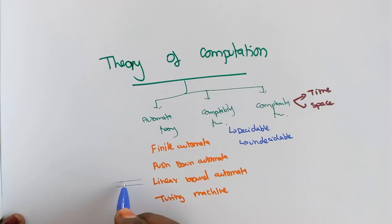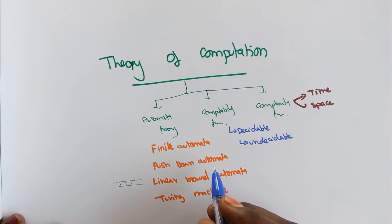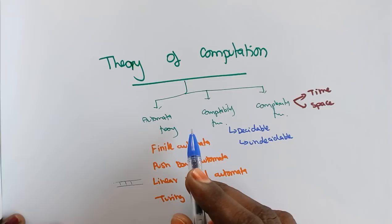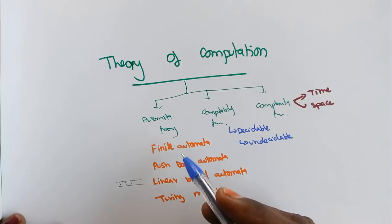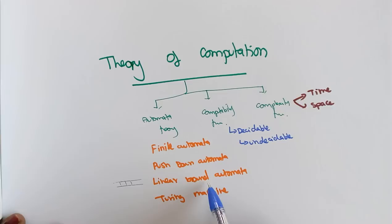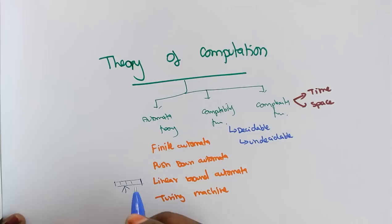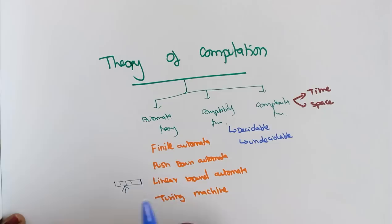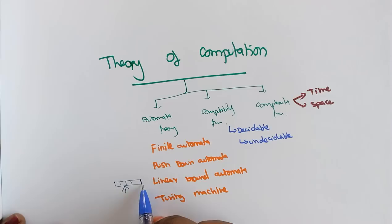The next model introduced is Linear Bounded Automata. It uses a finite tape as a memory unit. The limitation of Pushdown Automata is that since it uses a stack, insertion and deletion can only happen at the topmost element — random access is not possible. Linear Bounded Automata moves beyond this by providing a limited-size tape with a read/write head that can move either left or right, allowing some extra problems to be solved. The limitation here is the finite length of the tape.